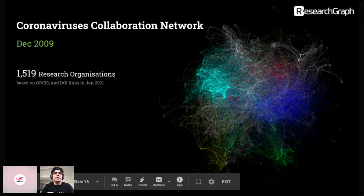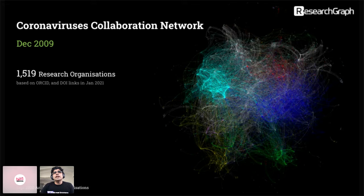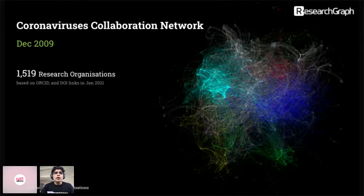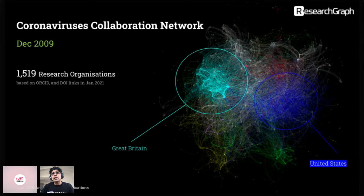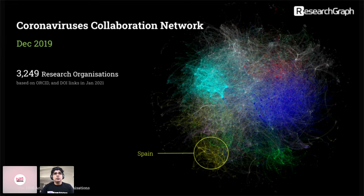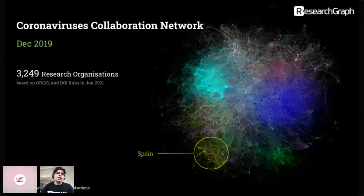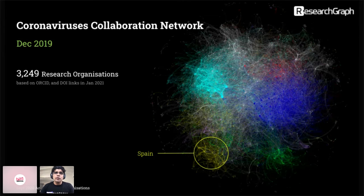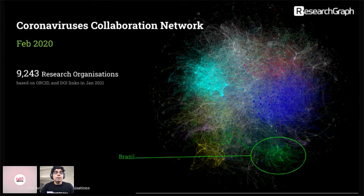Starting in December 2009, there were approximately 1,500 research organizations working on or collaborating on coronavirus research. Going a little further ahead, you can see organizations from Great Britain as well as the United States. Fast forward ten years to December 2019, and it has doubled to about 3,200 research organizations collaborating on coronaviruses. In just two months that tripled to 9,200-odd research organizations. Going into April, it becomes close to 16,000 research organizations, and by June there are 27,000 research organizations actually collaborating on COVID-19 research.